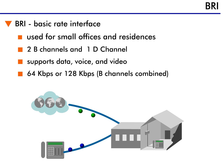A BRI service actually supplies three separate communication channels: two B-channels and a D-channel. The D-channel is used for signaling, like dialing a phone number or sending a disconnect message. The two B-channels are used to carry the communication streams. These two B-channels can be used separately or joined to form a higher bandwidth channel.